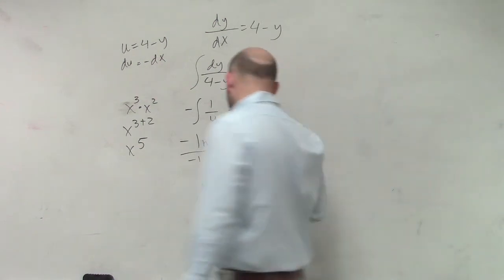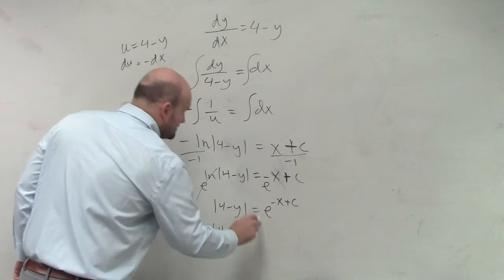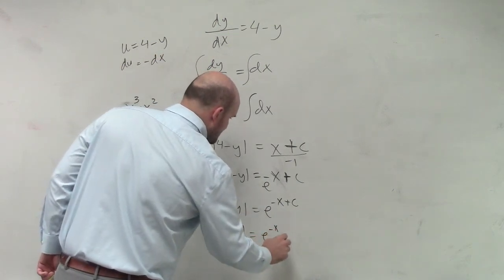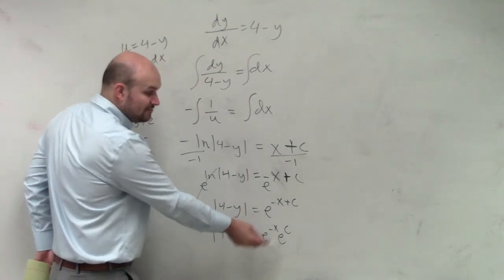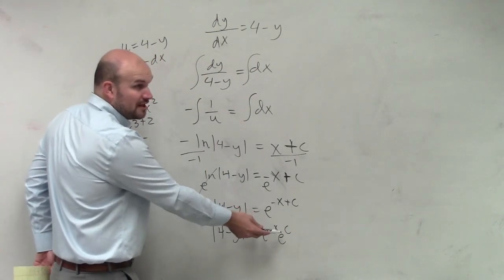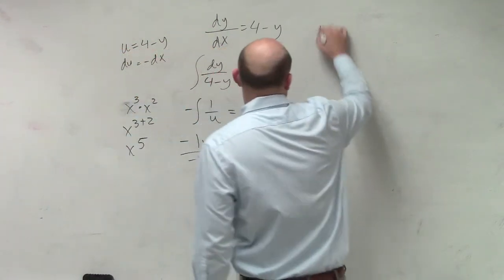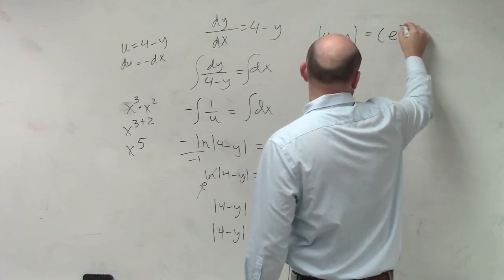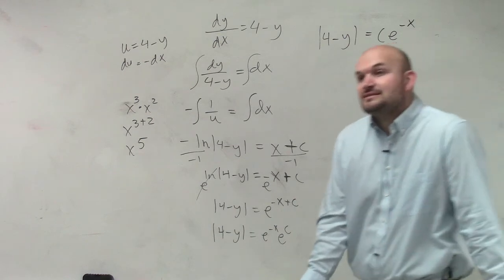So, I can rewrite this as absolute value of 4 minus y times... I could do this as e to the negative x times e to the c. Which, again, e is a number raised to another power, raised to another number, is still just a number. So, 4 minus y equals c e to the negative x. It's still just a number.